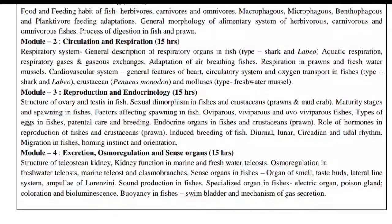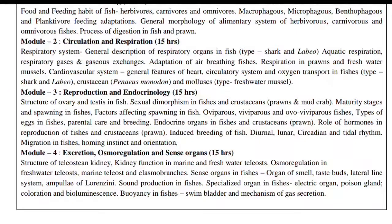Module 3 covers reproduction and endocrinology: structure of ovary and testis in fishes, sexual dimorphism in fishes and crustaceans (prawns and mud crabs), maturity stages and spawning in fishes, factors affecting spawning, and oviparous, viviparous and ovoviviparous fishes, types of eggs, and parental care.